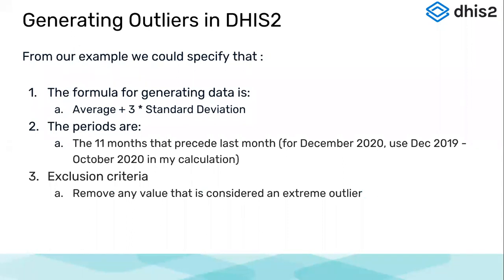For generating a predictor in DHIS2, say we use the average for the last 11 months and then 3 times the standard deviation — that is how we are calculating our threshold value. The periods would be the 11 months that precede the last month. For example, if I am generating the threshold for December 2020, I will skip November 2020 and use the 11 months before that.